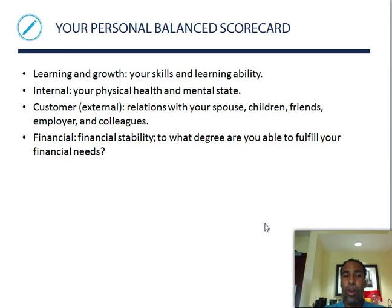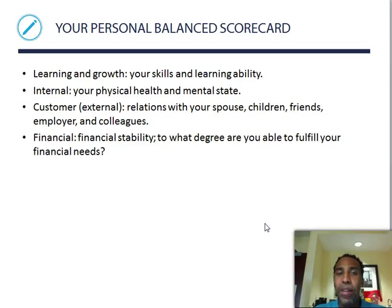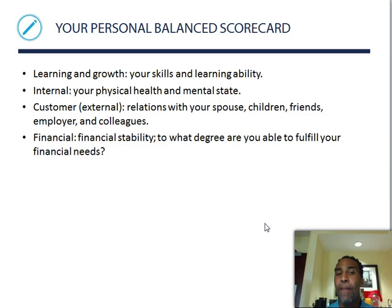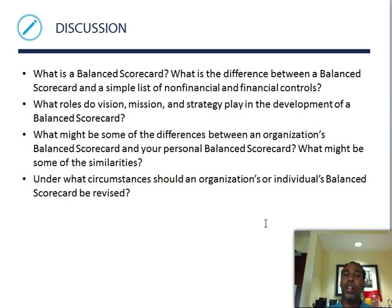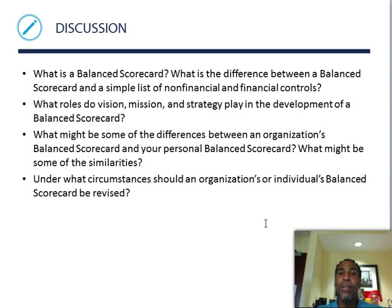You should also have a personal balanced scorecard to improve yourself. Learning and growth covers your skills and learning ability. Internal covers your physical health and mental state. Customer covers external relations with your spouse, children, friends, employer, and colleagues. Financial covers financial stability — to what degree are you able to fulfill your financial needs. That's the end of Chapter 14, Principles of Management. You have Chapter 15 remaining — have a good day and a great week.